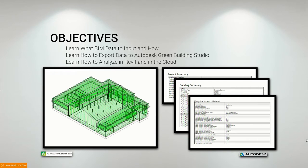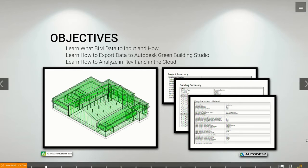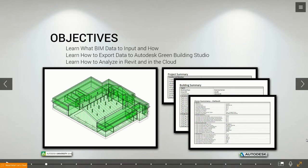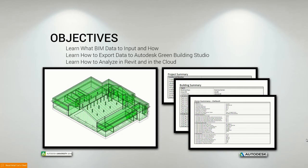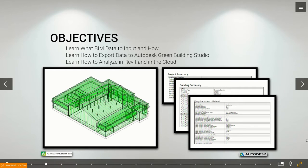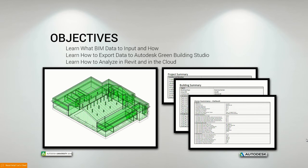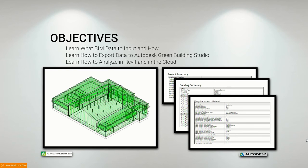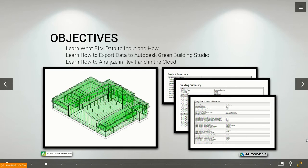Here are the objectives we're going to learn today. We'll learn about what kind of data we put inside our model — there are a lot of different types and ways to input that data, and many ways to extract it for energy analysis. When we talk about exporting, we can export an HTML file to investigate energy consumption, or take it out to Green Building Studio. Finally, we'll learn how to analyze in Revit and also inside the cloud.